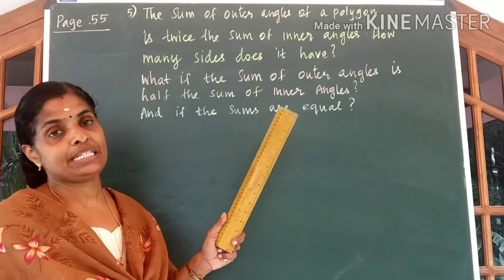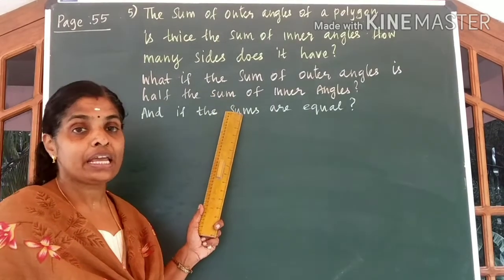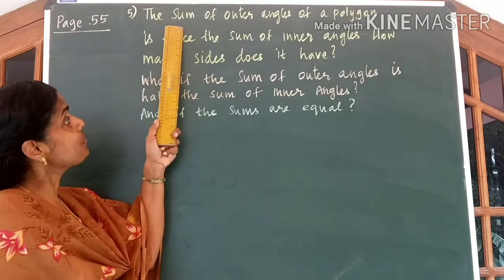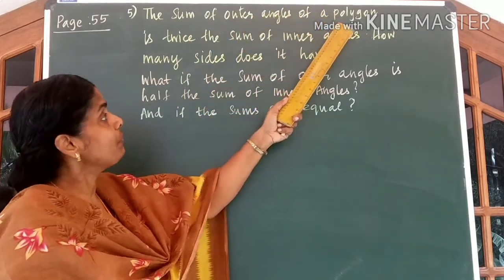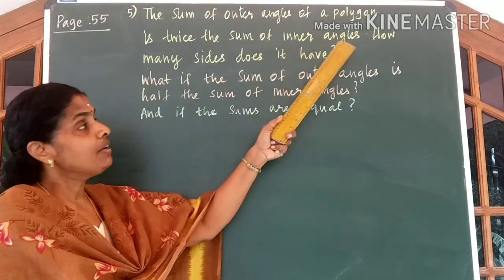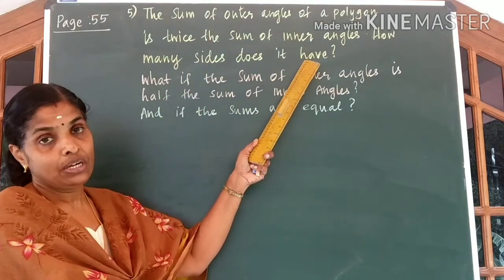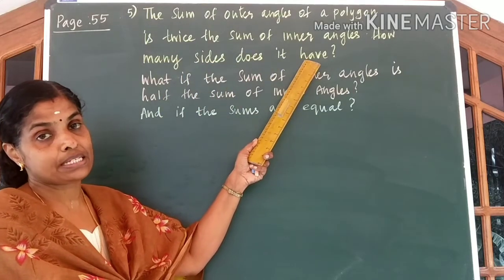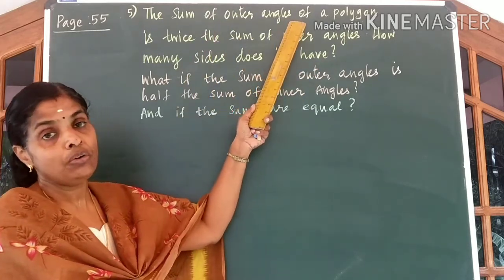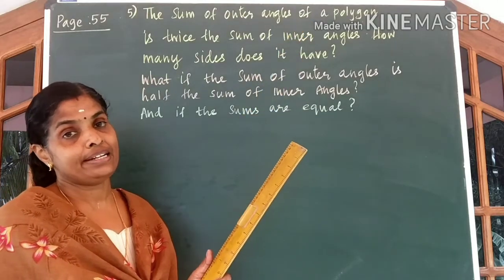Look at the 5th question in the same page. This question has got 3 parts. Let us discuss one by one. First: the sum of outer angles of a polygon is twice the sum of inner angles. The first part of the question asks how many sides does it have. Let us answer this first. Using the given condition — we know the sum of outer angles of any polygon is equal to 360 degrees.